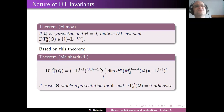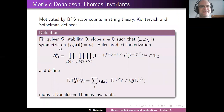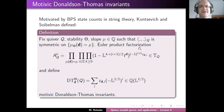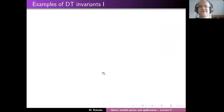To summarize the logic: DT invariants are defined completely formally — take a power series, factor it into an Euler product, collect the exponents into polynomials — and then one hopes these polynomials mean something. They do: they are Poincaré polynomials in an appropriate cohomology theory. Time for examples.